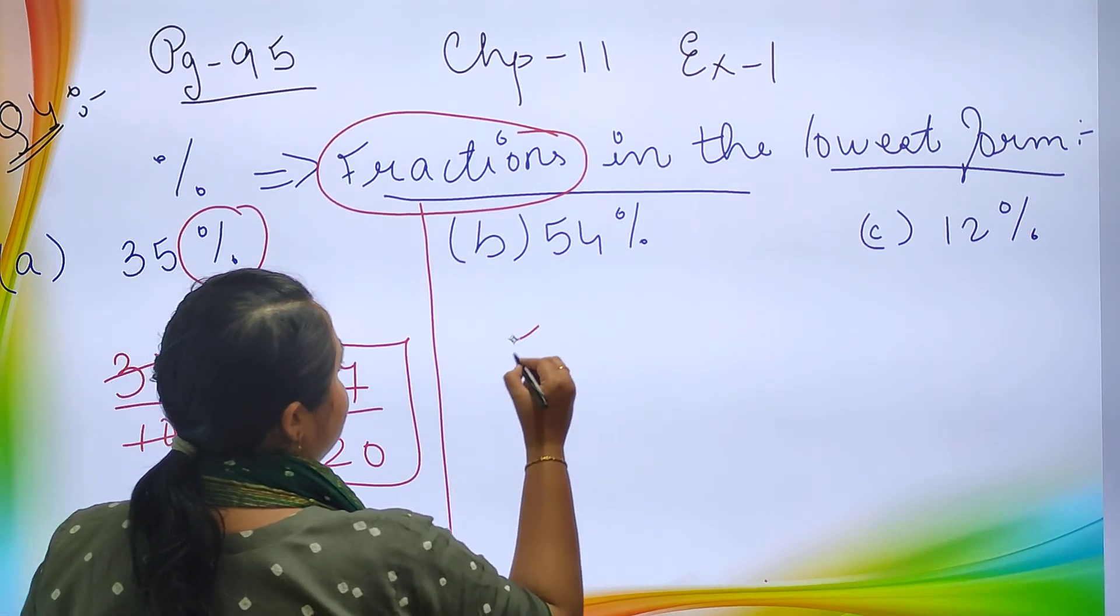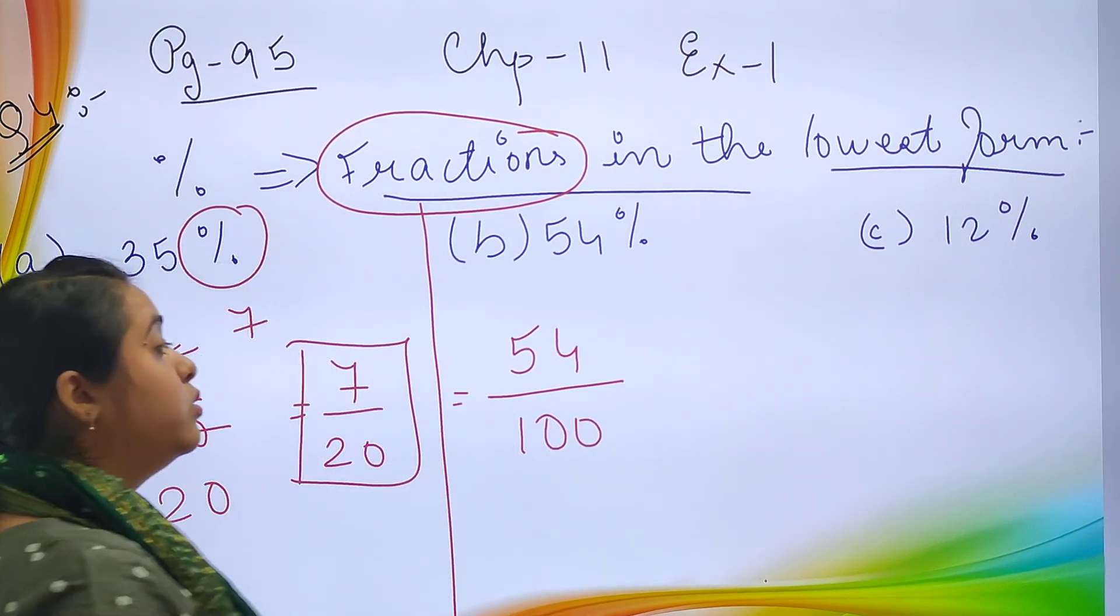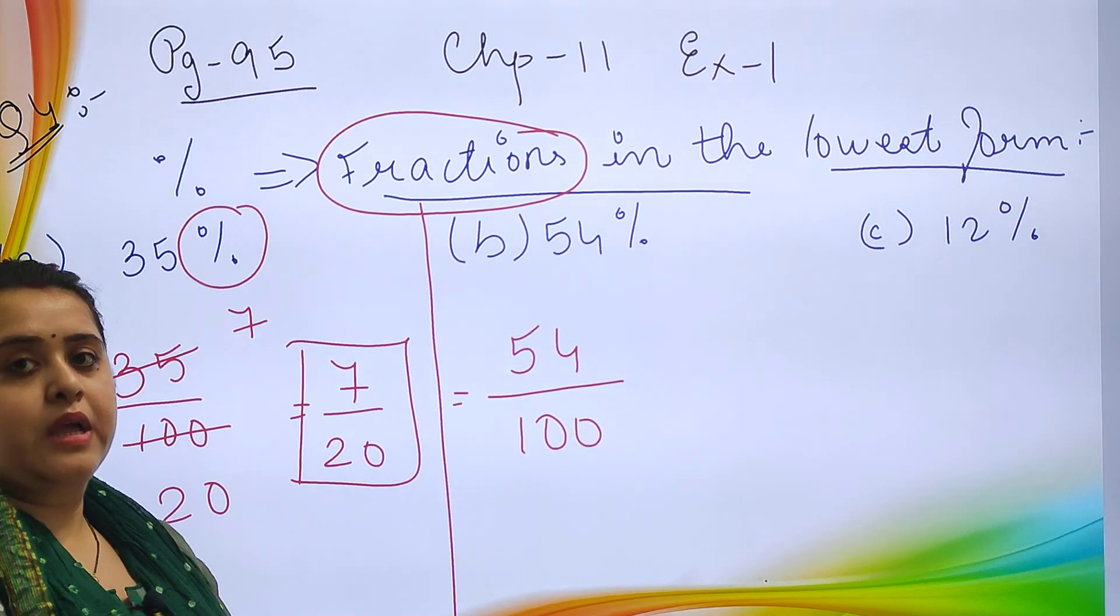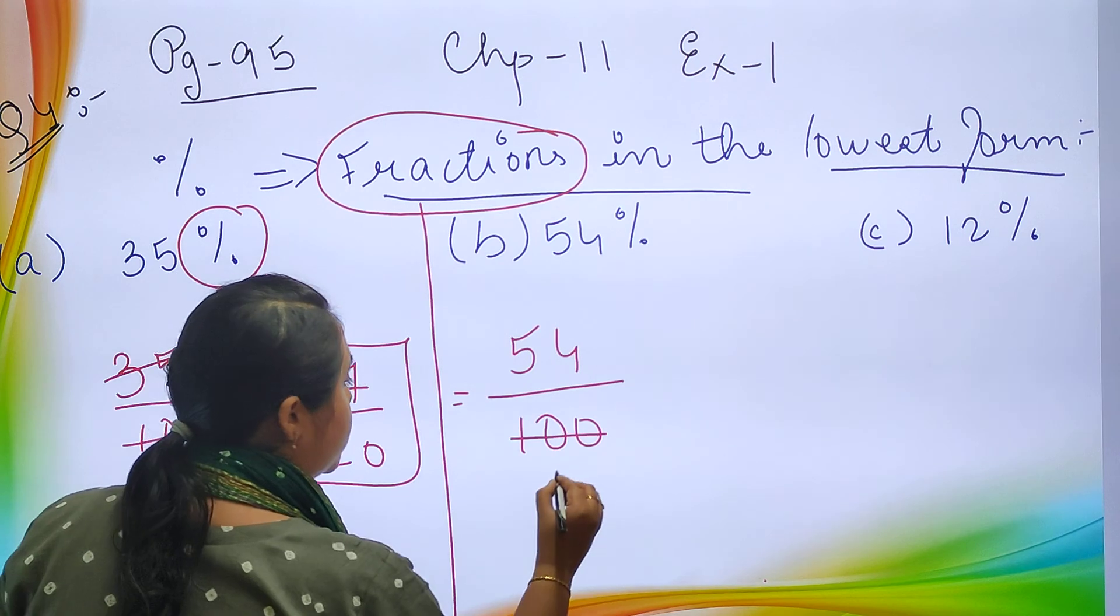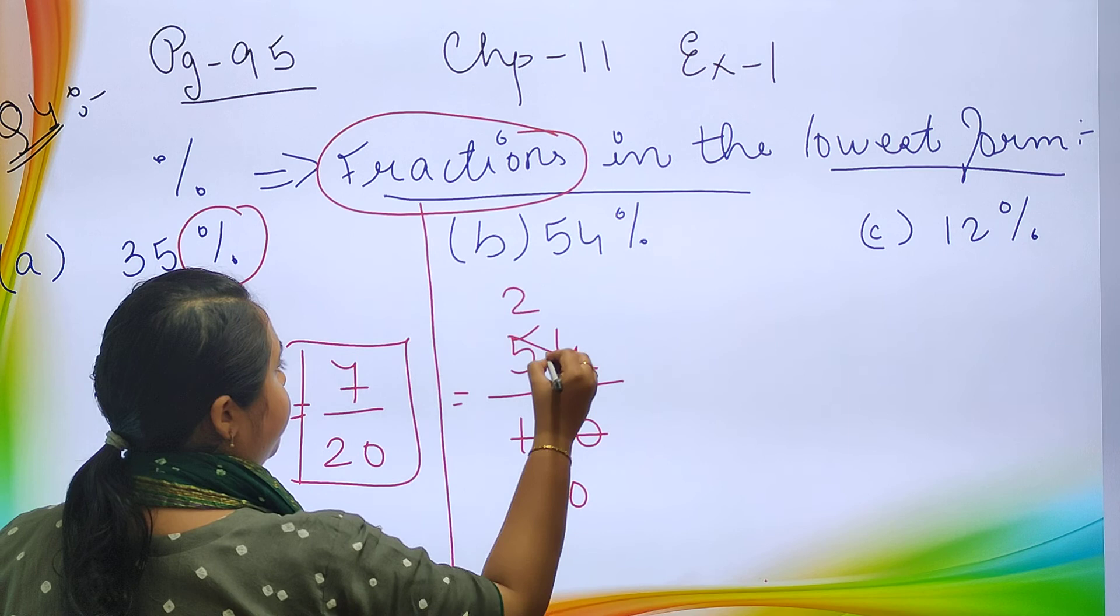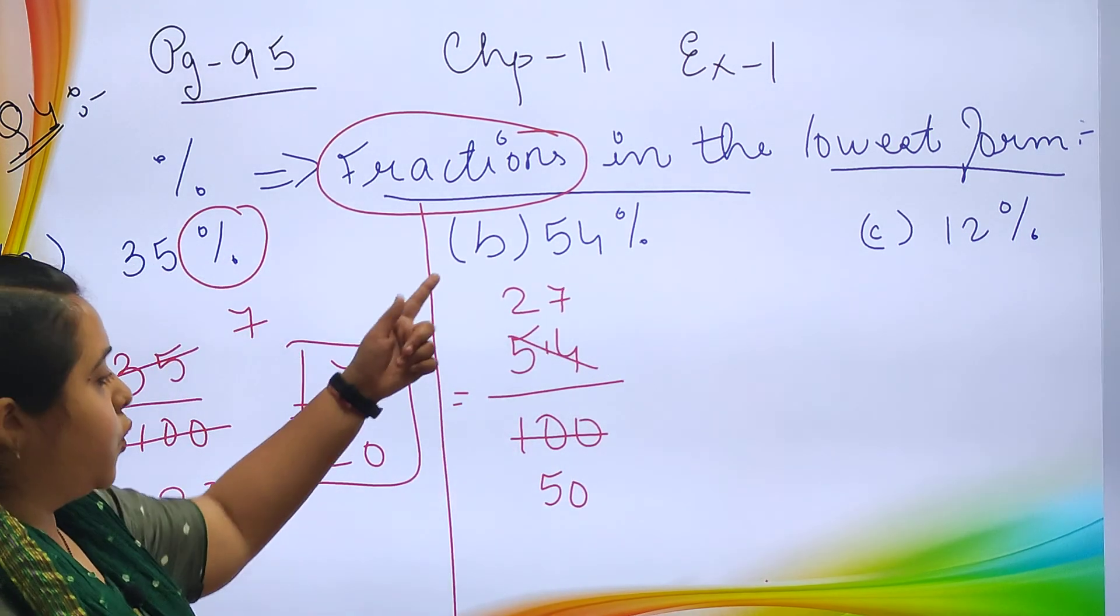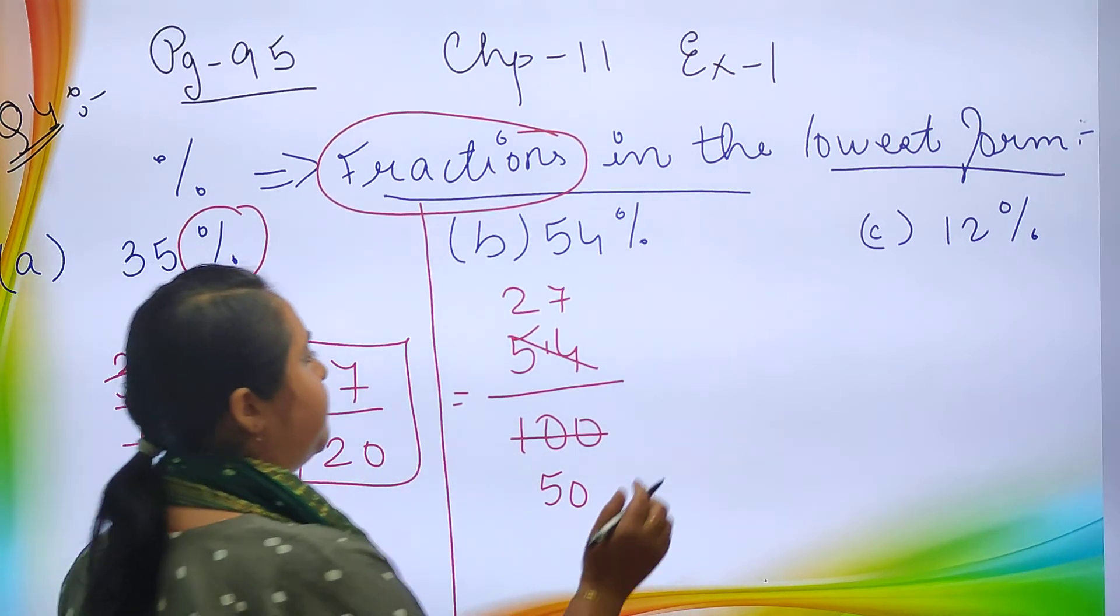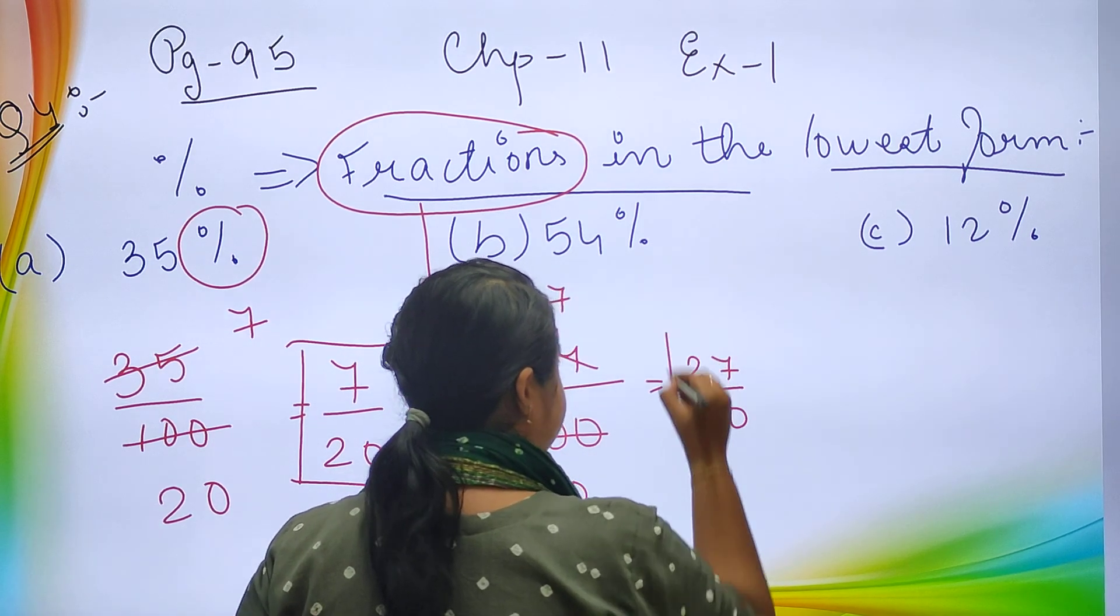Now let's do 54 divided by 100. Let's do it in the table of 2. 2 times 27 is 54, 2 times 50 is 100. So your answer will be 27 upon 50.